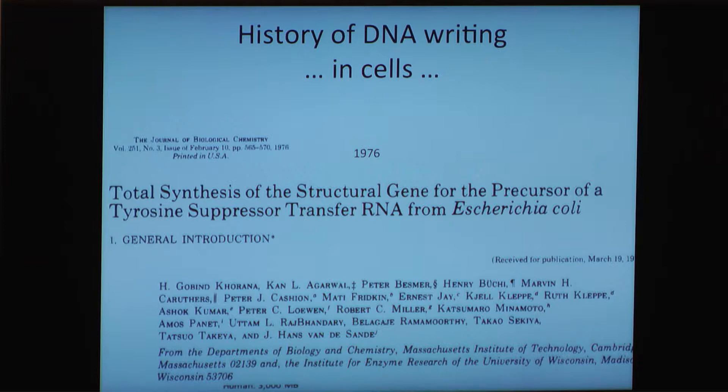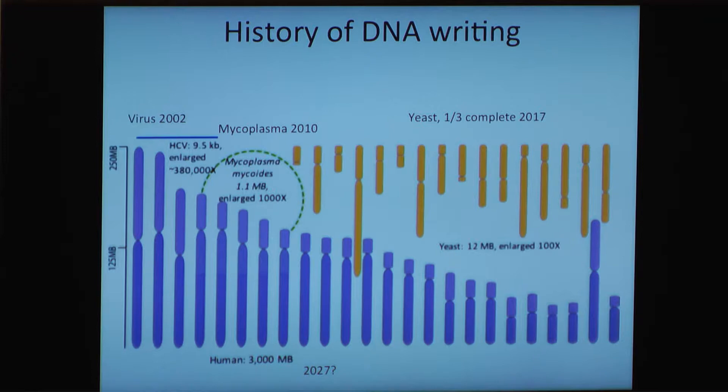The history of DNA writing in cells started around 1976 with Khorana's synthesis of the transfer RNA gene. It's extended recently — a virus in 2002, the Venter Institute's Mycoplasma in 2010, and this year, 2017, a third of the way through yeast, with maybe a human genome by 2027. Note that the scale here is enlarged one hundred-fold, this one a thousand-fold, and this one almost five hundred thousand-fold.